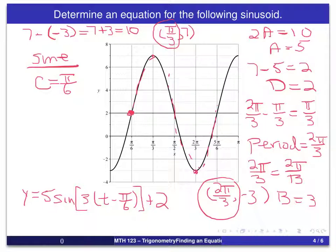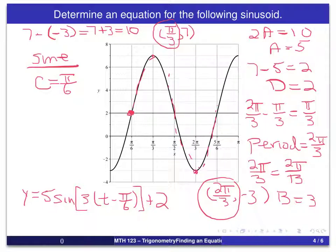As I should point out too, this is not the only correct answer. There are several different equations that can be used to represent this sinusoid. In fact, in the next slide, we're going to take a look at this and determine a cosine function for this. Here again, we still have a equals 5, b equals 3, and d equals 2.